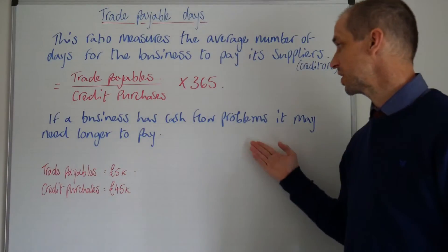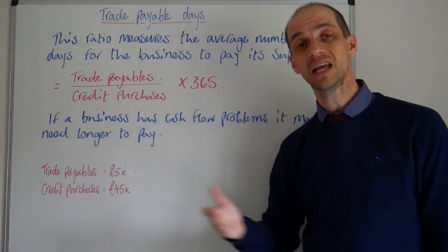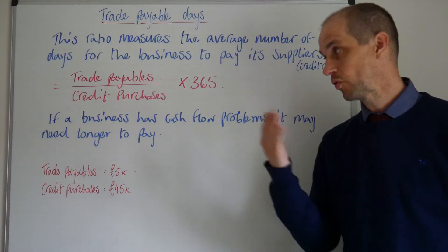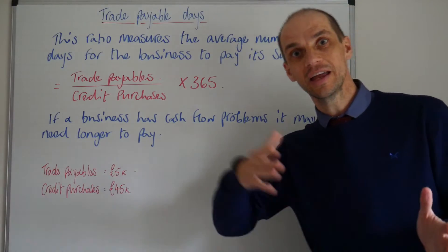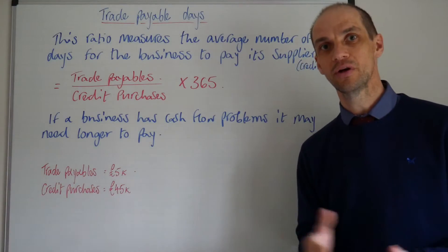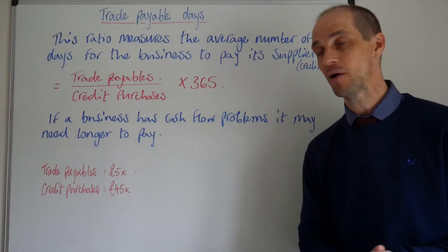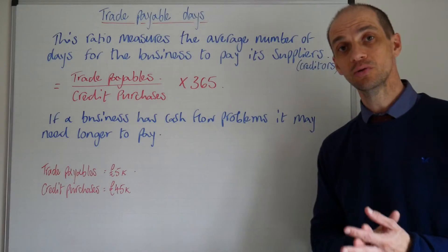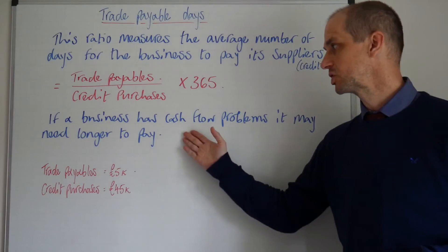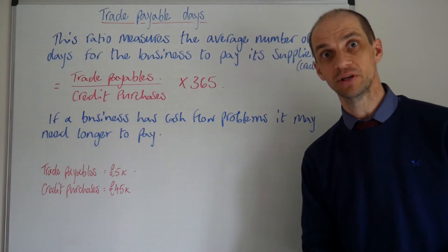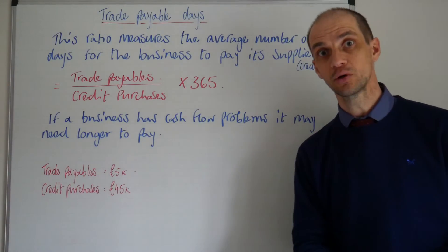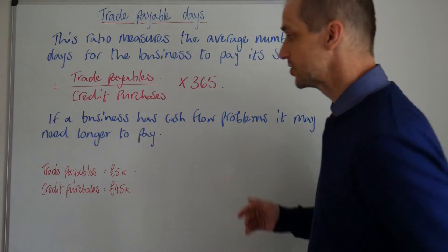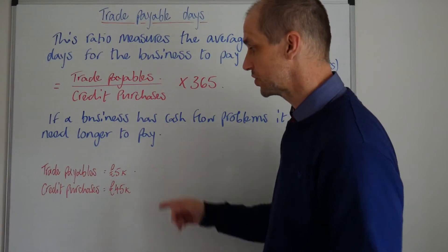If the business has cash flow problems, it may need longer to pay and may be paying in days much further than the actual credit terms allow. For instance, if you're allowed 28 days and you're taking 52, well clearly that may illustrate cash flow problems for the business, because they are having difficulty in actually meeting their obligations to their creditors.